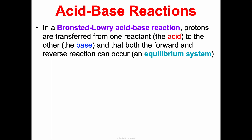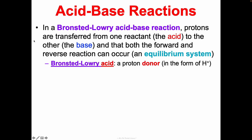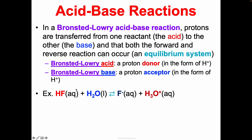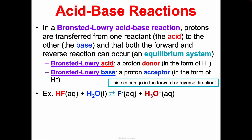A Brønsted-Lowry acid is a proton donor in the form of a hydrogen ion; a Brønsted-Lowry base is a proton acceptor in the form of a hydrogen ion. Let's look at an example. We have hydrofluoric acid and water — the arrows go in both directions because it can go in the forward or reverse direction. We have our acid here and our base here.